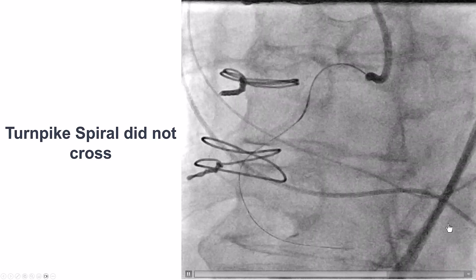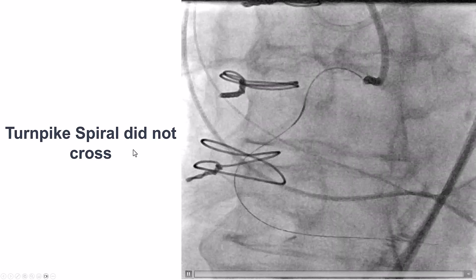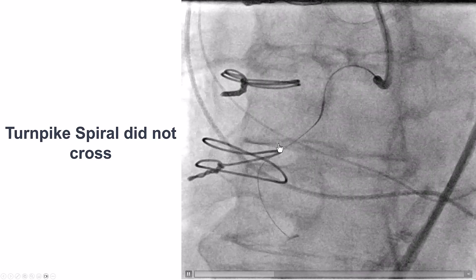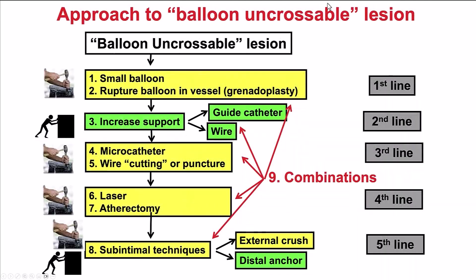The problem started afterwards because we were unable to advance the Turnpike Spiral despite an unplatched guide through the mid-RCA. This is a microcatheter-uncrossable lesion, approached similarly to a balloon-uncrossable lesion. We first try a small balloon, grenadoplasty, and get more support with guide extensions. We can use different microcatheters or the wire-cutting technique, laser, or atherectomy or subintimal techniques. In this particular case, laser might not be the best approach because laser over a polymer-jacketed guidewire might result in melting of the wire coating and entrapment of the laser catheter over the wire.